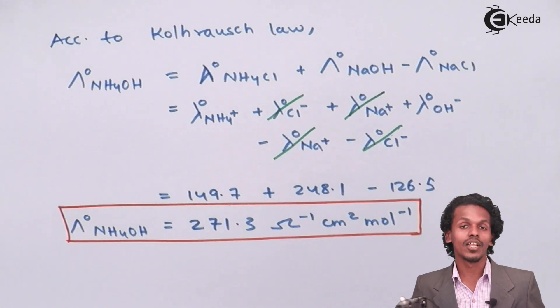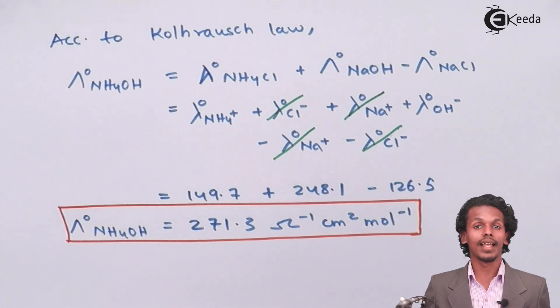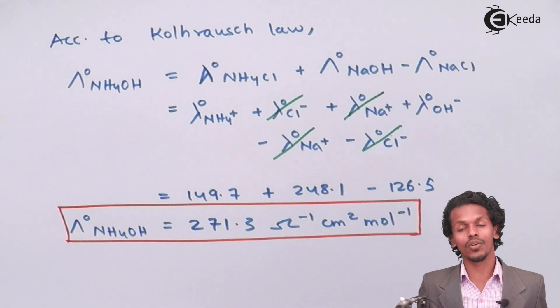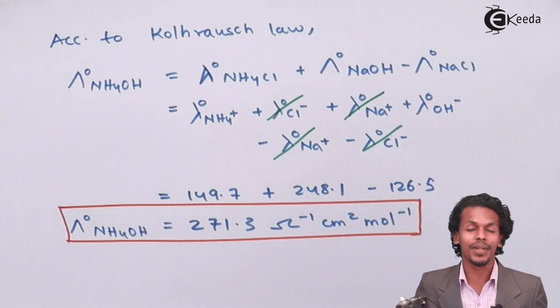So this is how we have calculated the molar conductivity of a weak electrolyte. In this case NH4OH was the weak electrolyte and because of the help of Kohlrausch's law, we have estimated this value. It was very simple.